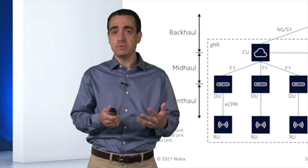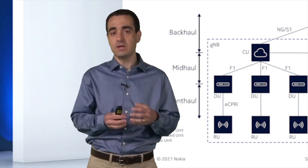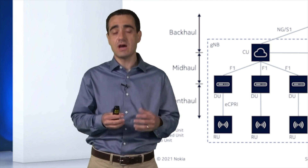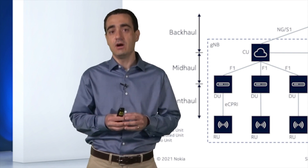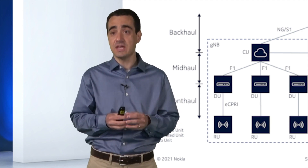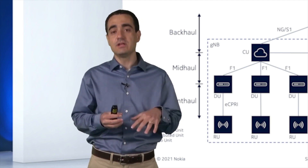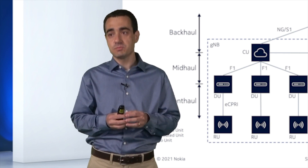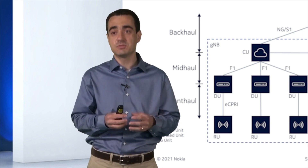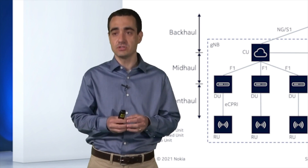These splits have been made such that we call them high layer split or non-real-time, because that's where all of the non-real-time processes take place in the CU. As well, a lower layer split in the fronthaul, or real-time split, because that's where all of the real-time functions take place.